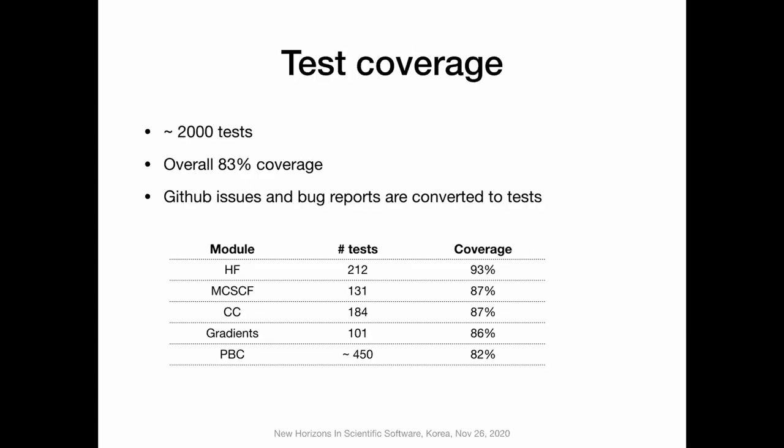About the tests right now: the package is covered by roughly 2,000 tests, and these tests cover more than 83% of the code. They are run on GitHub CI triggered every time people submit a commit or a pull request. Many of the tests actually come from GitHub issues and bug reports — we basically add tests whenever we solve a bug reported on GitHub.